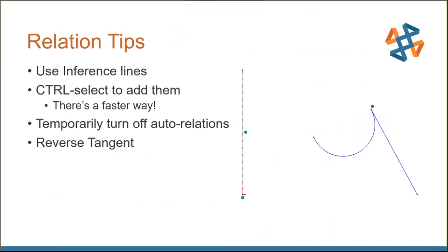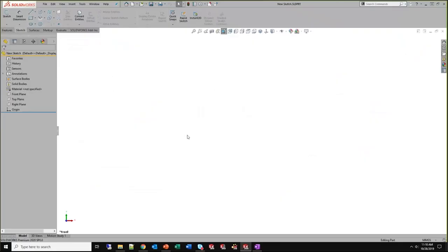A couple of relation tips — I'll keep all examples super short and simple. Leverage the inference lines, which I'll show live. Use the Control key to multi-select, but I'll show you a faster way to add relations between entities. Temporarily turn off auto relations with the Control key. And one of my favorite enhancements: reversing tangents. If you've accidentally sketched an inverted arc, there's a much easier way to fix it than the old delete-and-recreate approach. Let me jump into SOLIDWORKS.